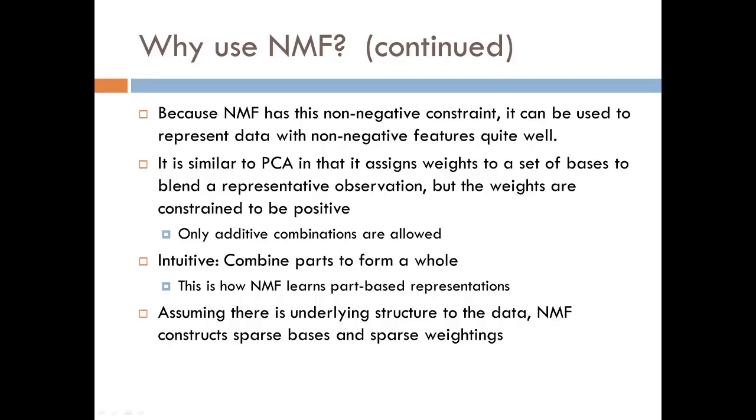So, because NMF has this non-negative constraint, it can be used to represent data with non-negative features quite well. I used the example of a database of images before because an image is constrained to have only positive pixel intensities. NMF is similar to PCA in that it assigns weights to a set of bases to blend together a representative observation. But the weights and bases are constrained to be positive, so only additive combinations are allowed.